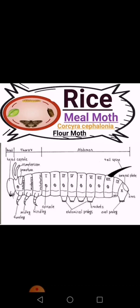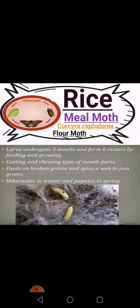The larva has abdominal prolegs, anal prolegs, hind legs, mid legs, and forelegs, which are active in its motility. The larva undergoes five moults and forms six instars by feeding and growing. An instar is the individual appearing after each moult. The mouth parts are cutting and chewing type; it feeds on broken grains and spins a web to join grains together.